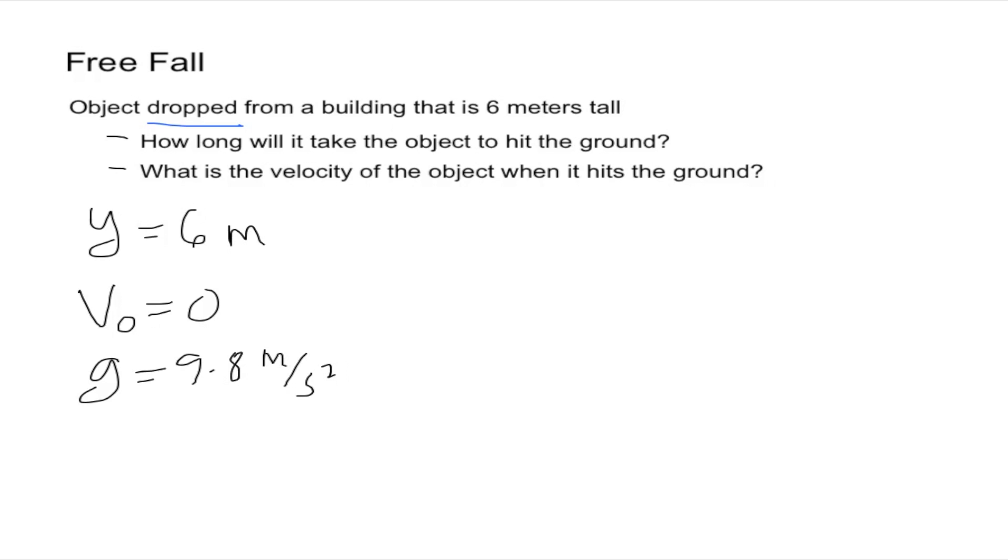The first one is asking for the time it takes for the object to hit the ground. So we'll have to use the first formula which stated that y equals y naught plus the initial velocity times time minus one-half times gravity times time squared. We can make this equation way simpler by cancelling what we have.